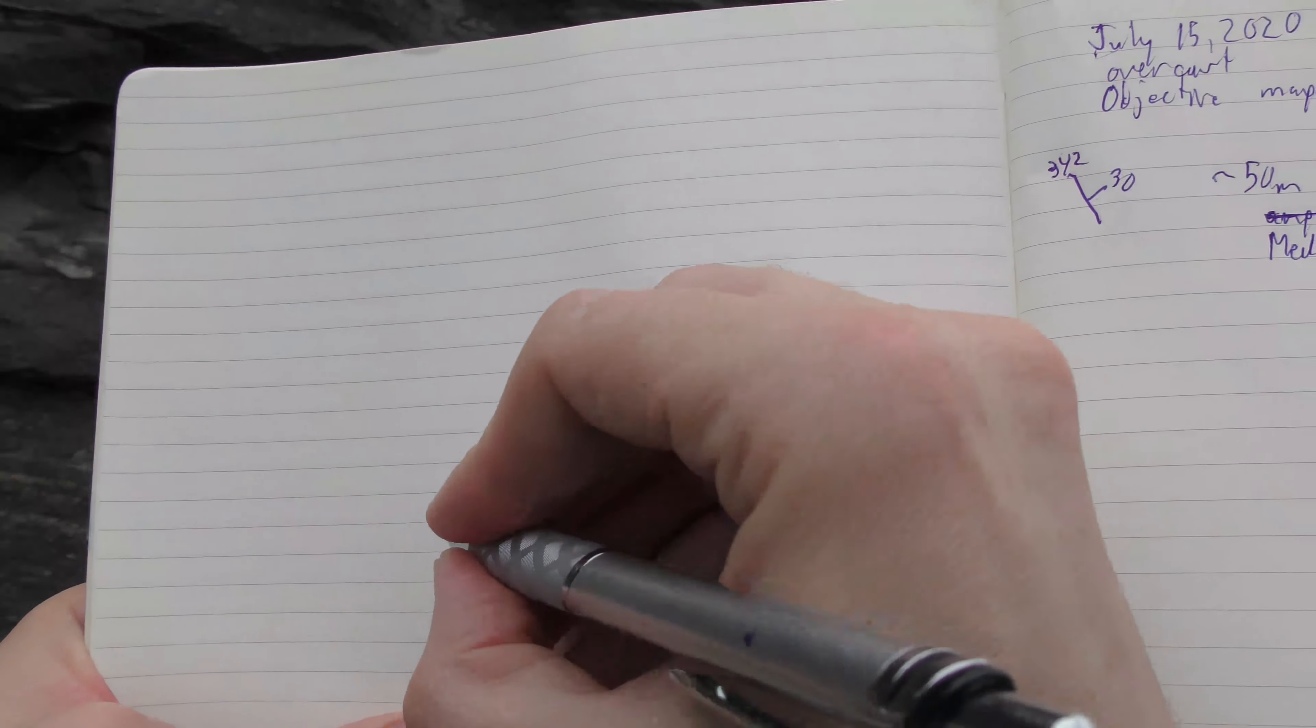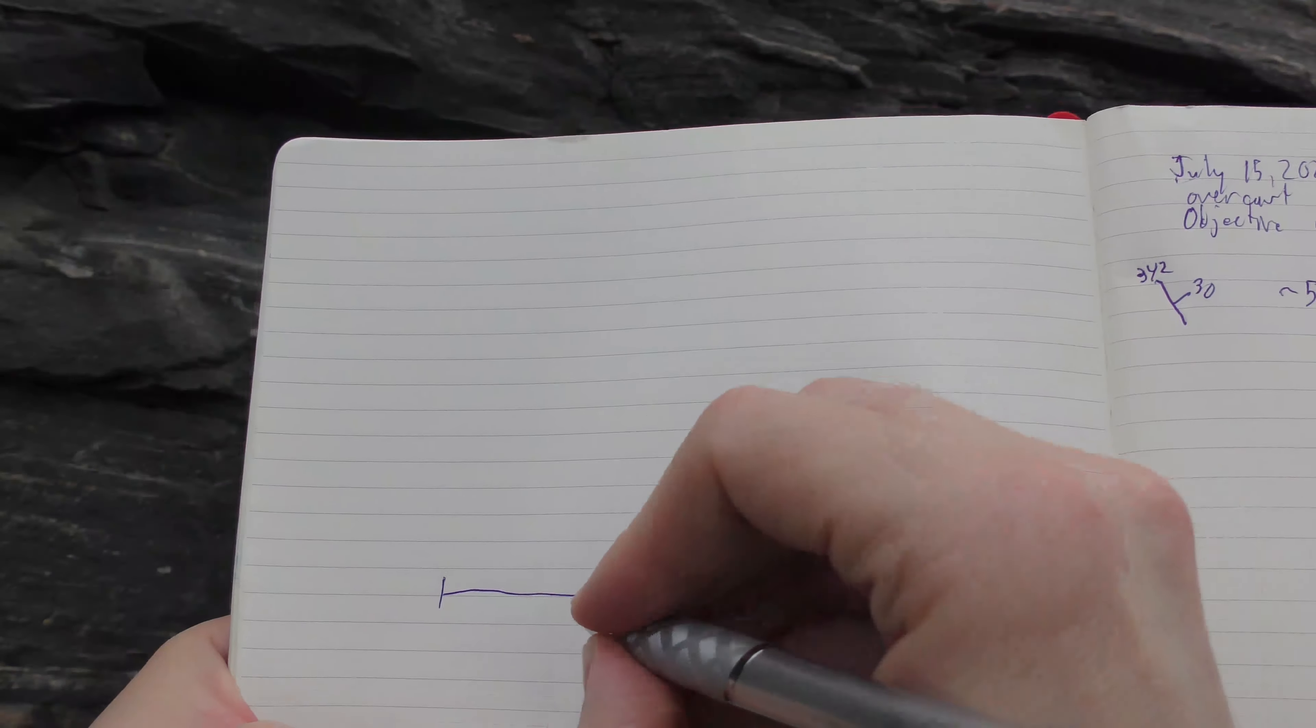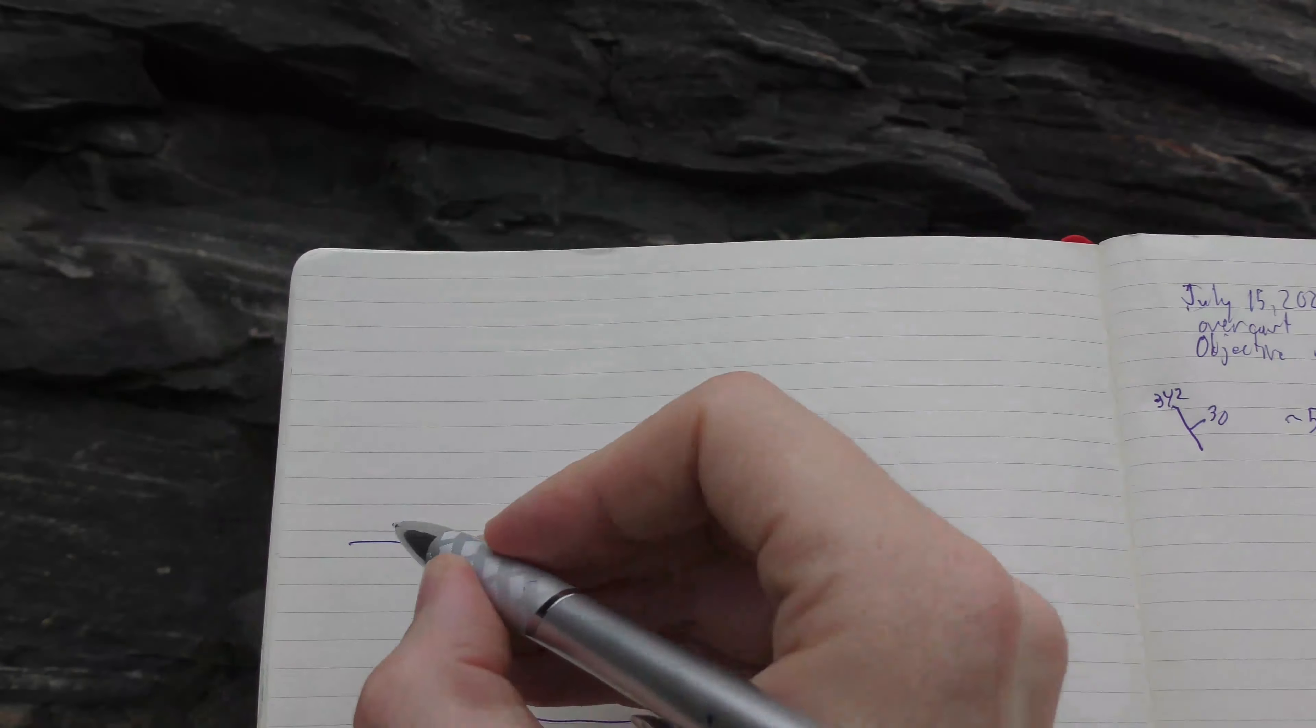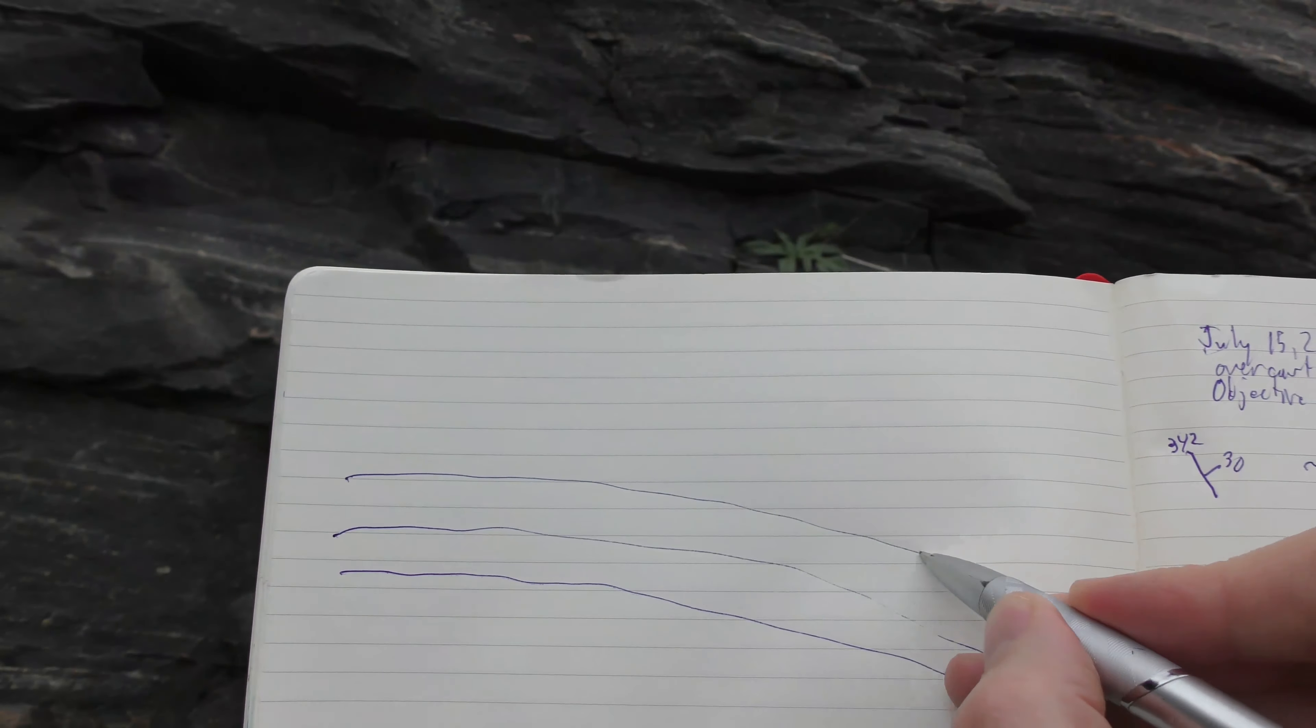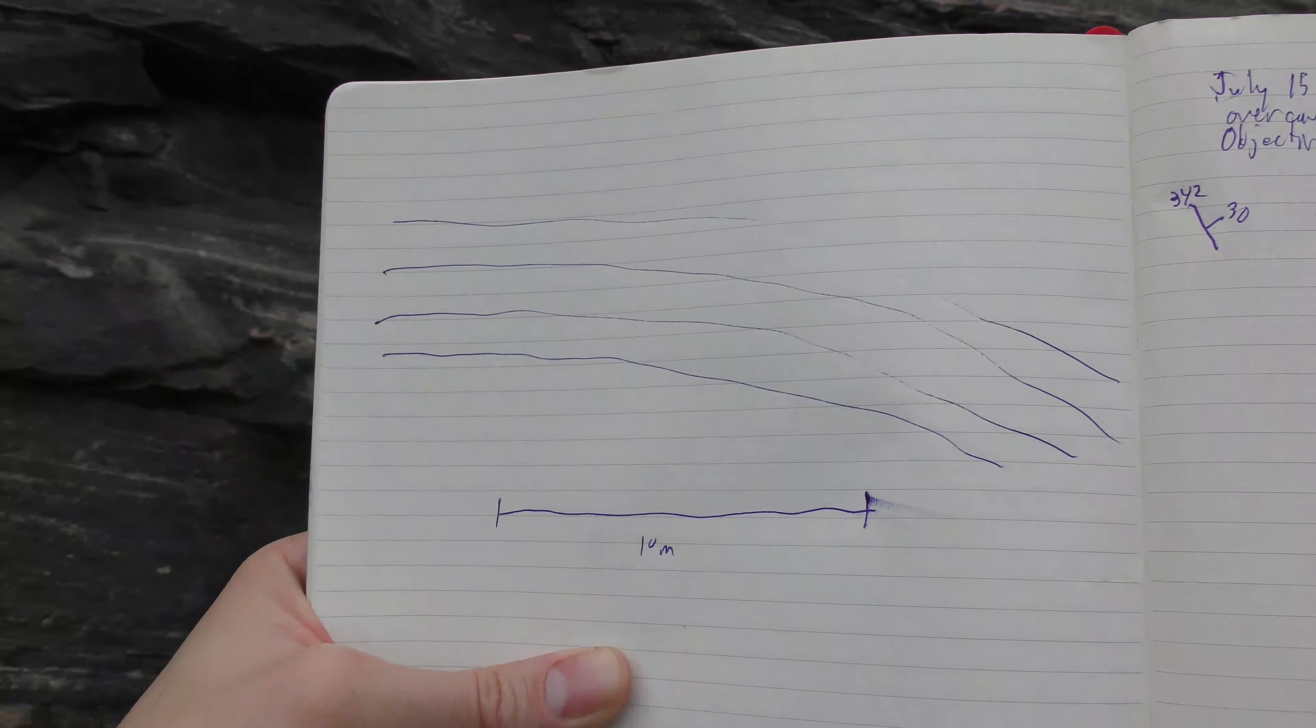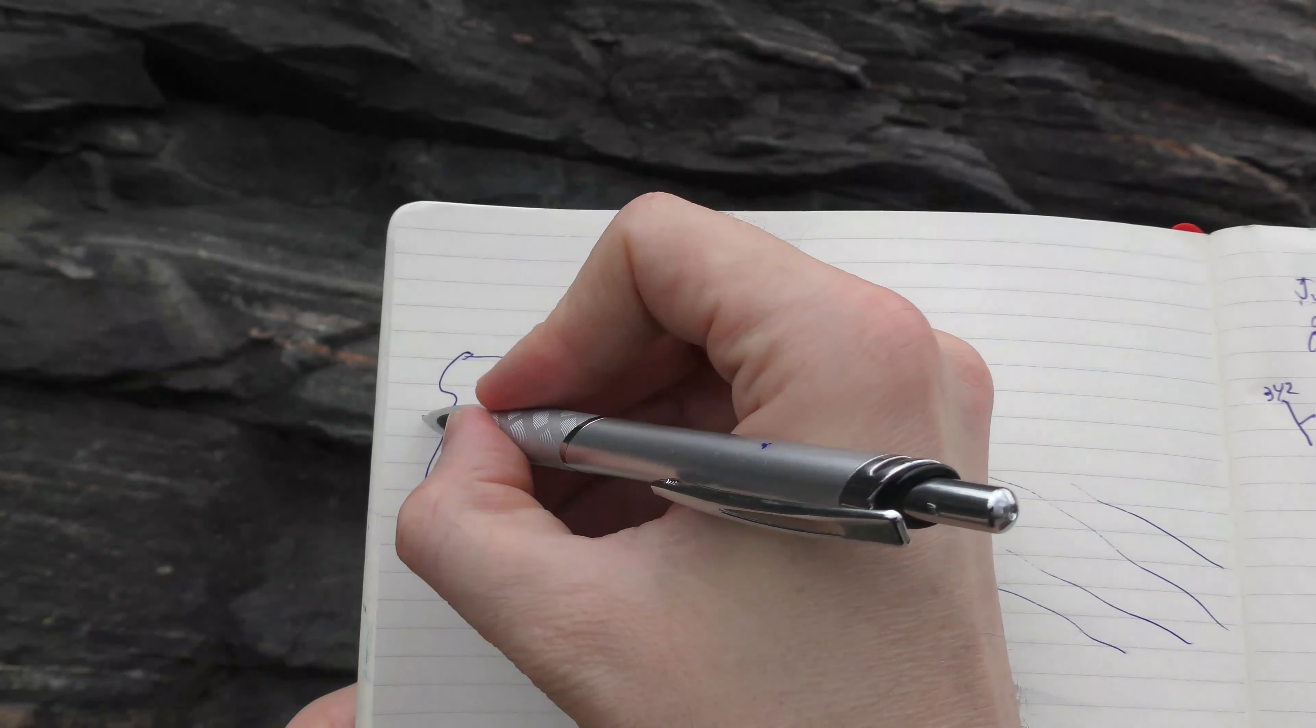Now one thing I'll also do is do a sketch with a little scale here. So I got 10 meters, and what I want to do is show that we have a change in the dip. It's a little bit folded here, there's not really distinct folds and they're all trending the same way, but the strike and dip are varying a little bit.